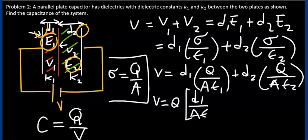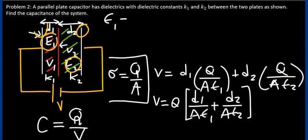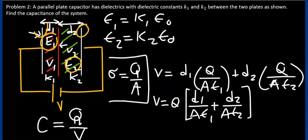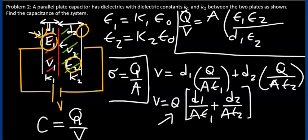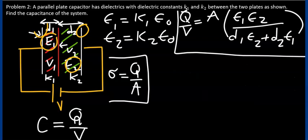D1 over A·ε1 plus D2 over A·ε2. Since permittivities can be expressed in terms of their respective dielectric constants — where ε₀ is the permittivity of vacuum — we see that Q over V, which is just the capacitance of this capacitor, can simply be written as A·ε1·ε2 over D1·ε2 plus D2·ε1.